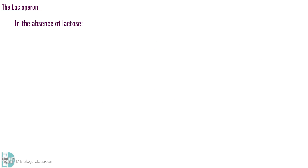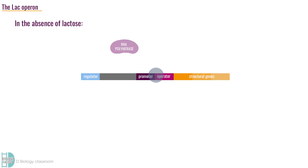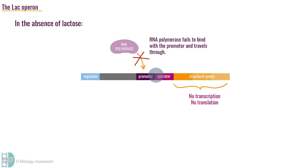In the absence of lactose, transcription and translation of the regulatory gene leads to the production of a repressor protein. The repressor protein binds to the operator. This causes RNA polymerase to fail to bind with the promoter. Hence, transcription of the structural genes does not occur and no enzymes are produced via translation. This makes sense, as in the absence of lactose, the enzymes are not needed by the cell.